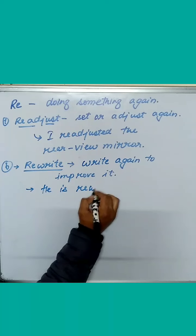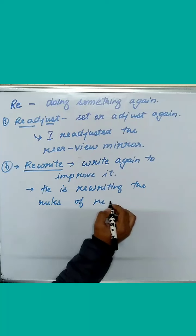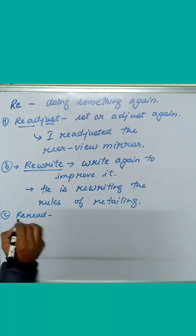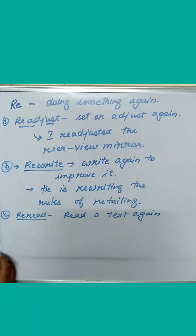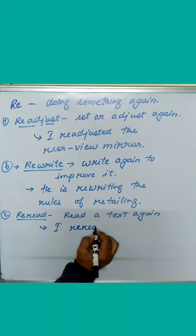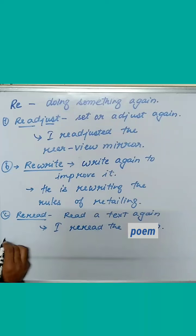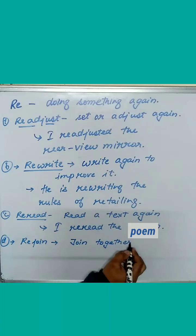The next one is rewrite, like writing something again to improve it. And in the sentence, he is rewriting the rules of retailing. Third one is re-read, to read something again. In a sentence, I re-read the poem.